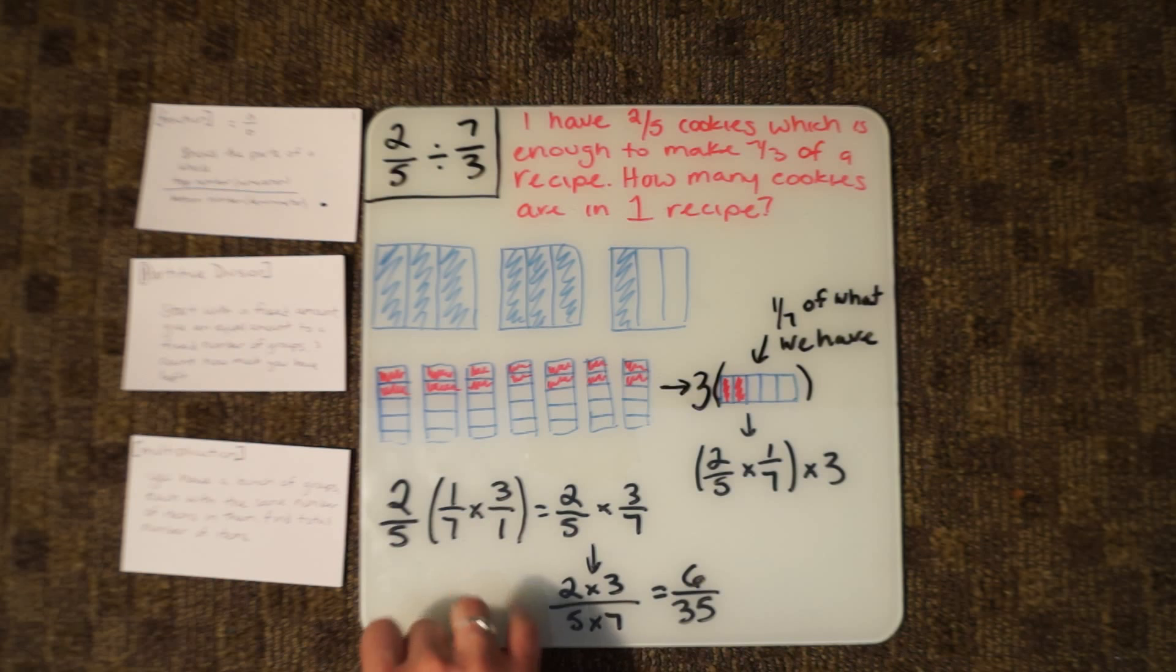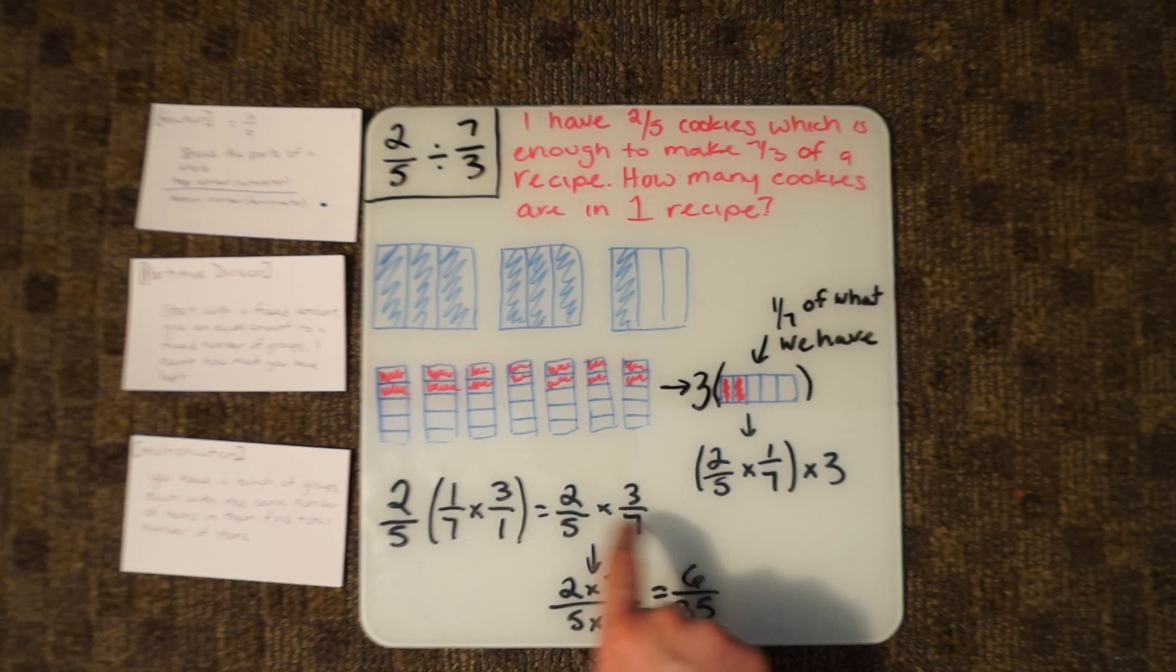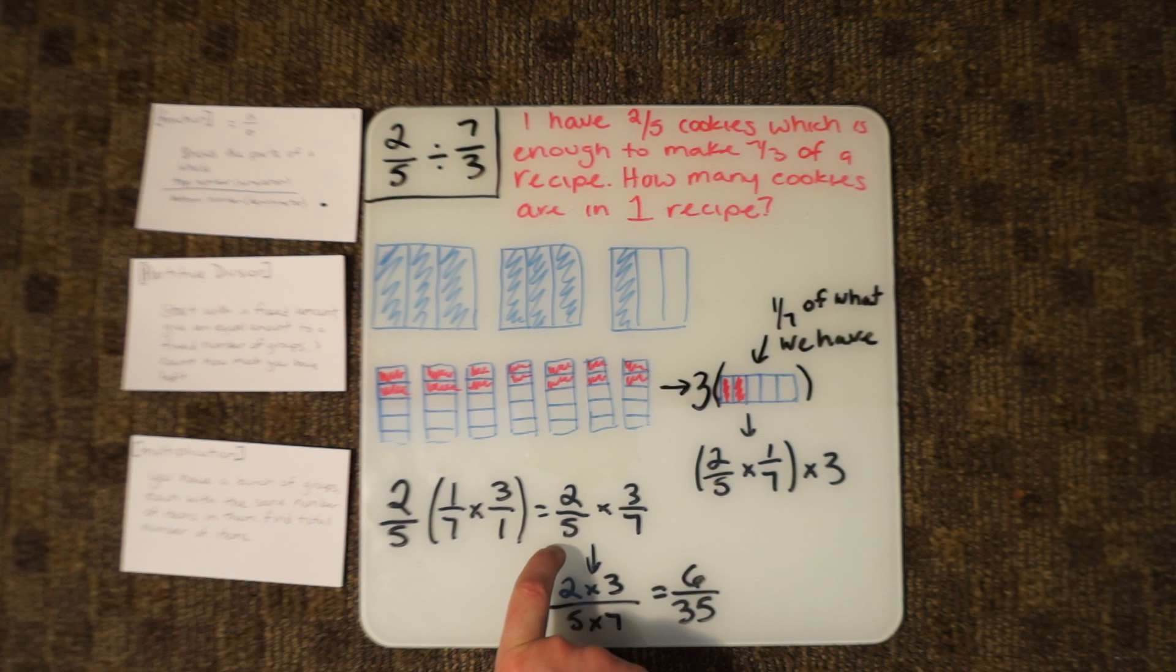And then you can rewrite this as 3/7, and then this is 2/5. So now we have 2/5 times 3/7.